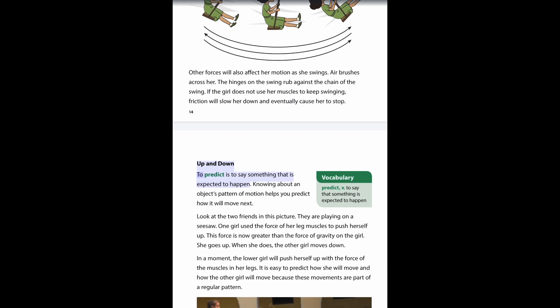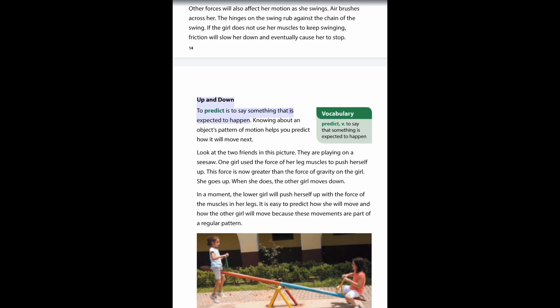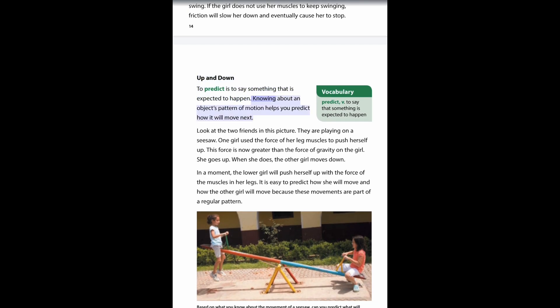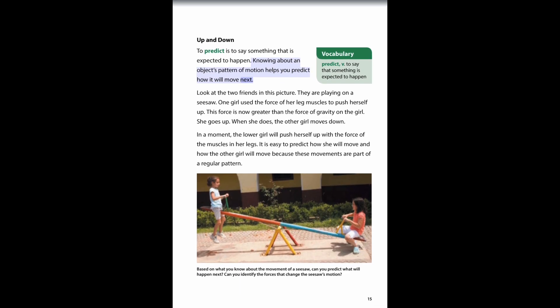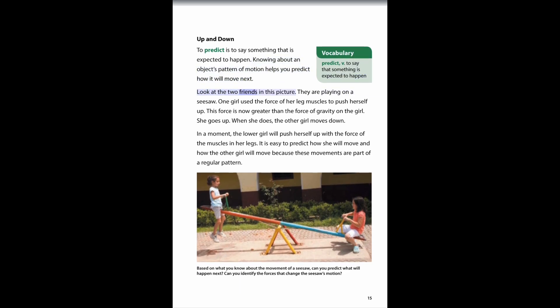Up and down: to predict is to say something that is expected to happen. Knowing about an object's pattern of motion helps you predict how it will move next. Look at the two friends in this picture. They are playing on a seesaw. One girl used the force of her leg muscles to push herself up. This force is now greater than the force of gravity on the girl. She goes up.